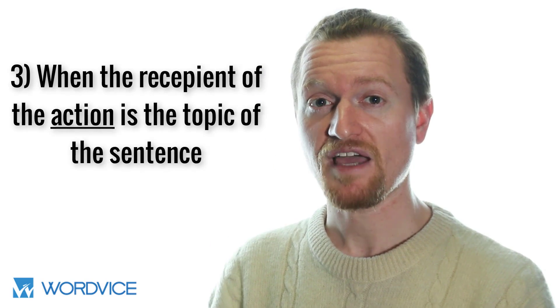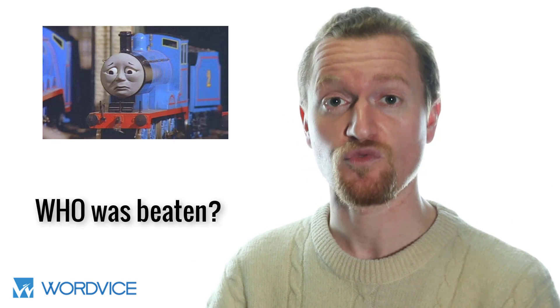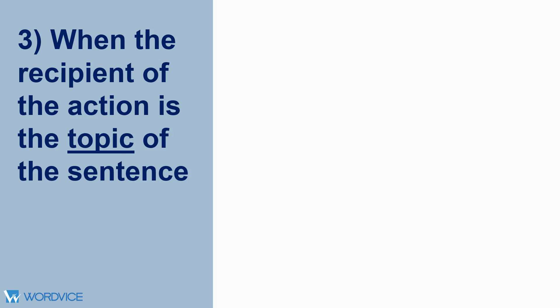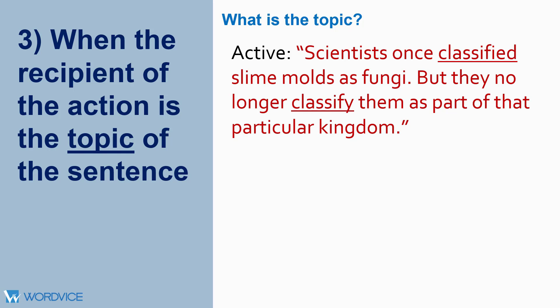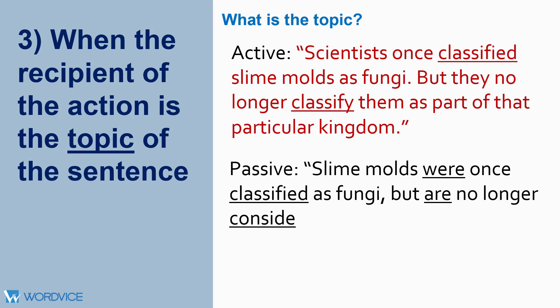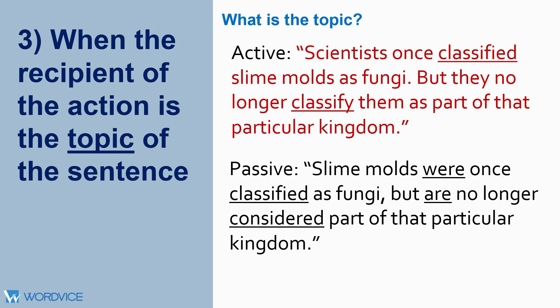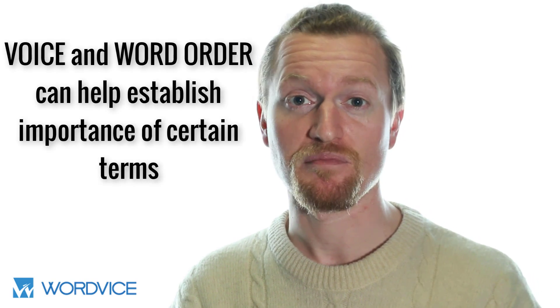The third circumstance in which using the passive voice is advisable is when the recipient of the action is the topic of your sentence. It is sometimes necessary to use the passive voice in order to put the most important information at the beginning of your sentence. Consider these examples: in the active voice, 'scientists once classified slime molds as fungi, but they no longer classify them as part of that particular kingdom.' In the passive voice, 'slime molds were once classified as fungi, but are no longer considered part of that particular kingdom.' In the active version, 'scientists' occupies the topic position, suggesting they are an important focus. In the passive version, 'slime molds' are placed in the topic position, indicating they are the primary focus. Which voice you use and how you order your elements can make a big difference in establishing the importance of one element over another.